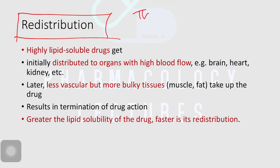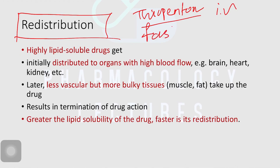We have one drug called thiopentone. Thiopentone is an anesthetic agent — an anesthetic drug which is given intravenously. It is said that if you introduce thiopentone, the patient goes into the anesthetic phase while the drug is still in the syringe. So it is that fast acting — a quick action, a fastest acting drug.